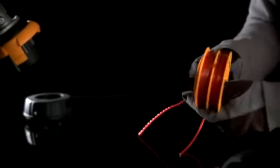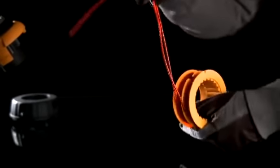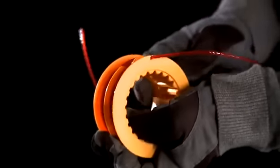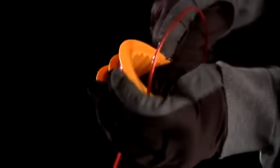Fasten both ends of the line by winding them in the same direction. Fasten the line end on the edge of the reel, which makes it easier to replace the reel in the lid.